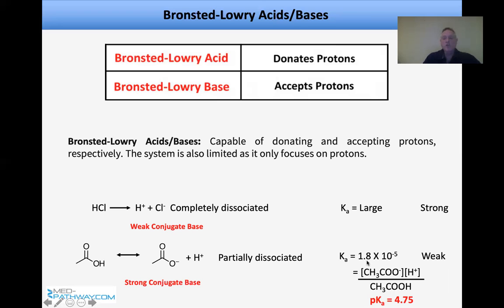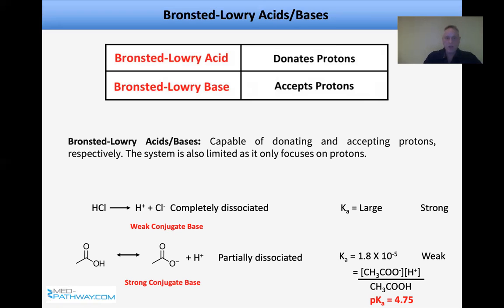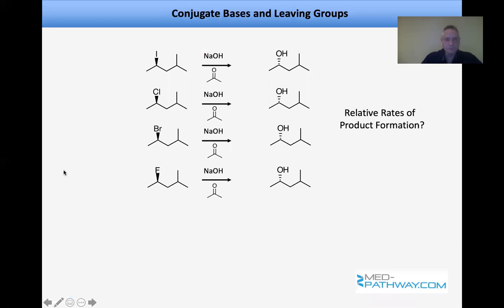Acetic acid's equilibrium constant Ka is 1.8 × 10⁻⁵, classified as weak because it does not completely dissociate. You should learn how to write the equilibrium expression because we'll be solving acid-base problems with it. The pKa of acetic acid — the negative log of Ka — is 4.75, a value worth committing to memory.